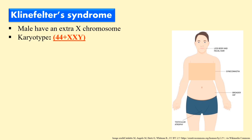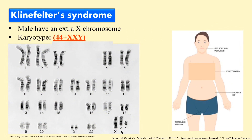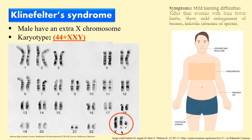If you look at the karyotype, you can clearly see that instead of XY, this patient has XXY. Due to this extra X chromosome, certain female-like characteristics develop in the male individual, including breast development, infertility, taller than average height, and some learning difficulties.